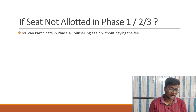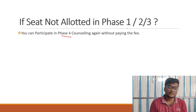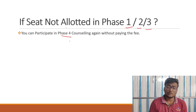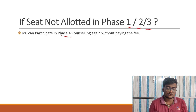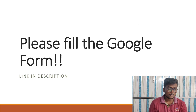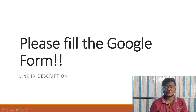Yes, you can participate in phase 4 if you didn't get allotted in phase 1, 2, or 3. And those who missed previous phases can also participate in the upcoming phase 4.